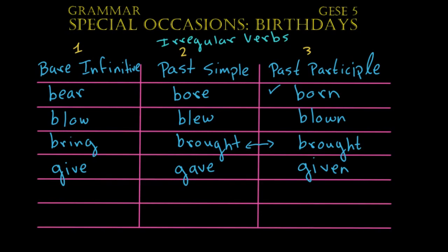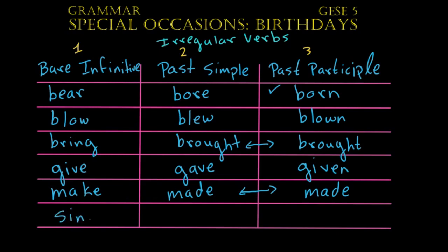Another verb that we can use is make, made, made — this is another verb that repeats itself in the second and third column. Maybe we can say the mother made the birthday cake. And finally, we can use the verb sing, sang, sung. So after the mother made the birthday cake, she brought it out and everybody sang happy birthday.